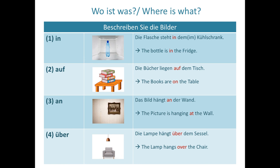First: 'Wo ist die Flasche? Die Flasche steht in dem Kühlschrank.' We can combine 'in dem' as a short form 'im,' which is also fine. The bottle is in the fridge. Second: 'Die Bücher liegen auf dem Tisch' — the books are on the table, just as we use 'on' in English.